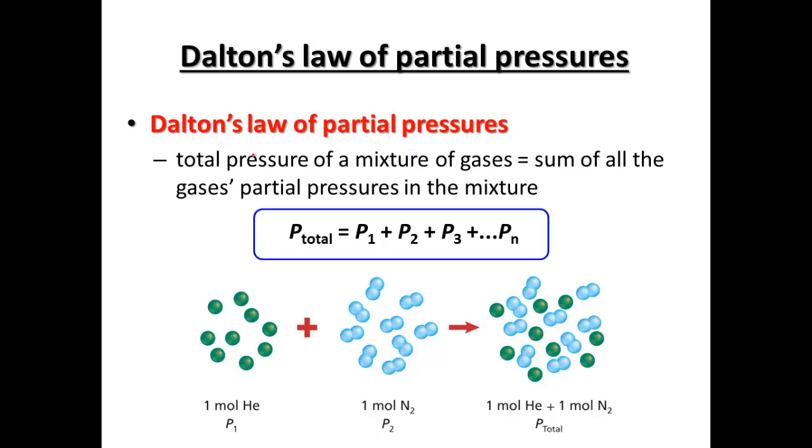So Dalton's law of partial pressures says the total pressure of the mixture of gas is equal to the sum of all of the pressures. Kind of like all the slices of pizza equal the total pizza. Each partial pressure of each gas will be included. PN just says that depends on how many gases we have. It would just continue on depending on how many gases are actually in the mixture.